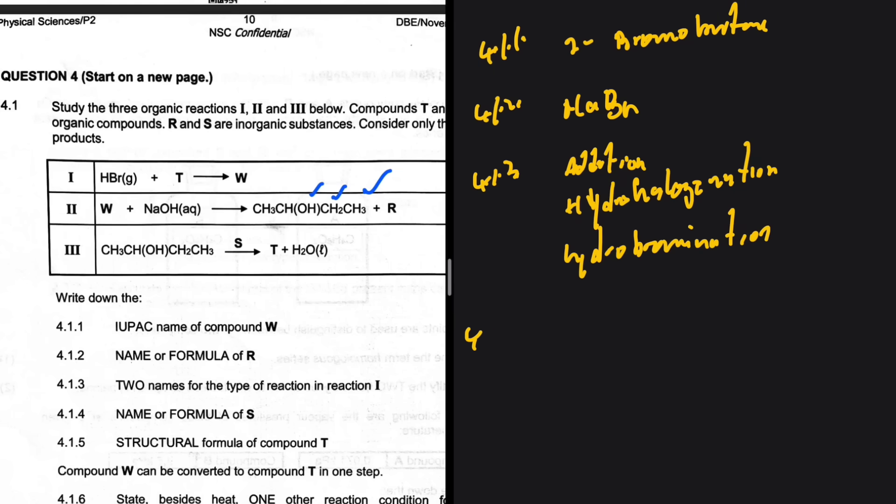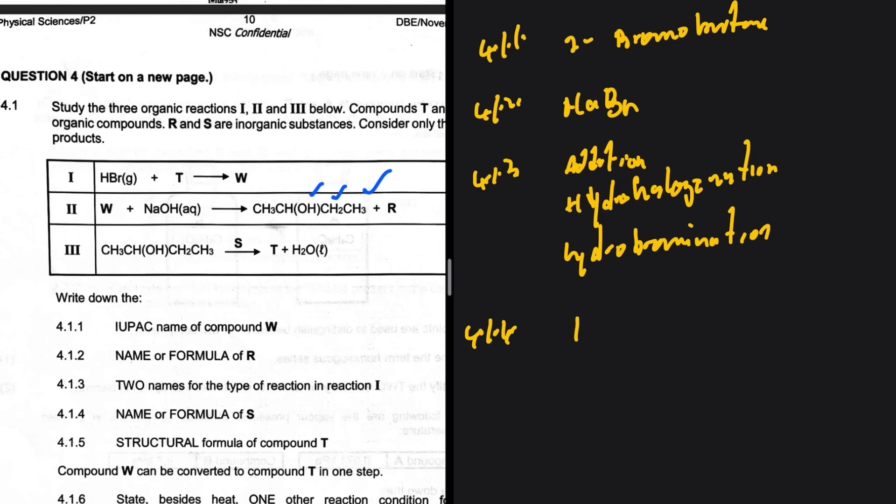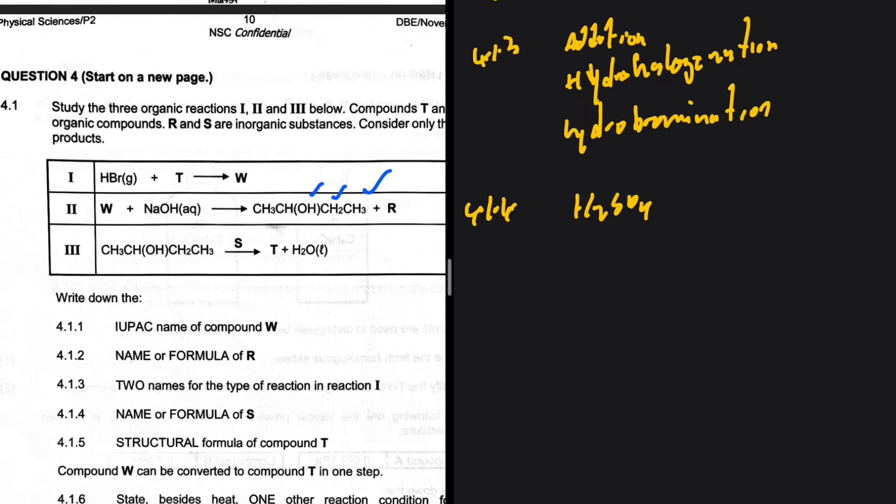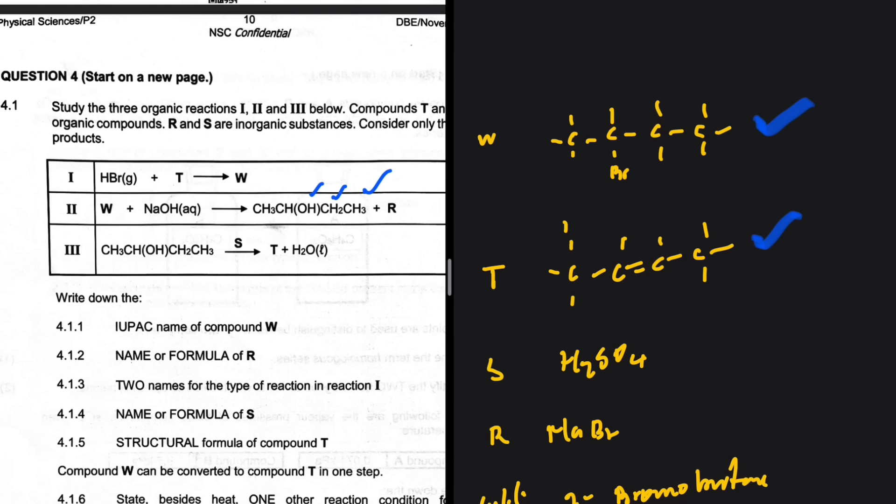4.1.4, name or formula of S. S is H2SO4, like we've established. And then 4.1.5, we're looking for the structural formula of compound T. Yes, T, I'm just gonna add the hydrogens here. So yes, that is the structural formula of compound T, one-two-three, one-two-three-four carbons.